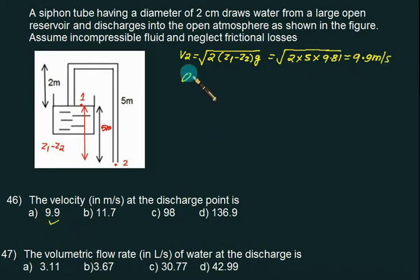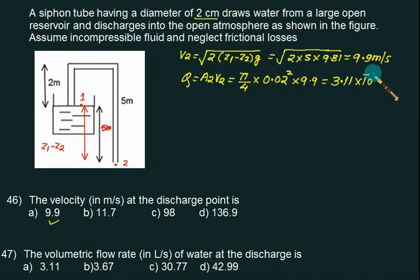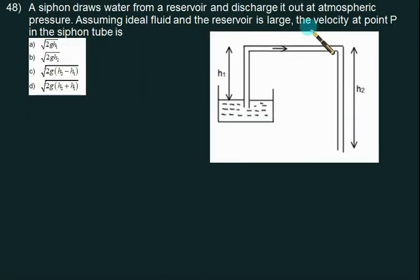To find out the volumetric flow rate, we'll use q equals A2 into v2. That's pi by 4 into diameter of the tube, which is 2 cm or 0.02, squared, times velocity 9.9. So this one is 3.11 times 10 to the power minus 3 meter cube per second, or 10 to the power 3 liters per second. So this answer is 3.11, choice A is correct. This is a second example on the siphon.